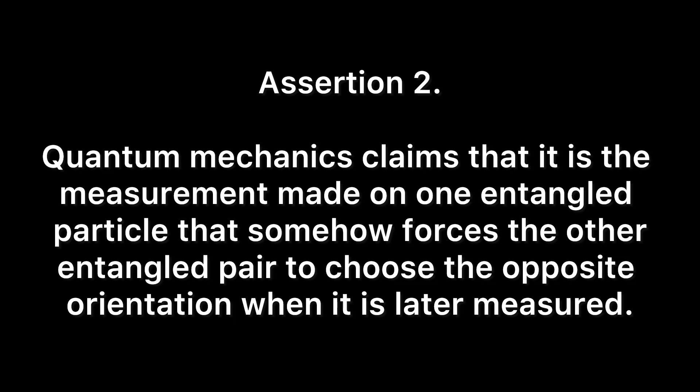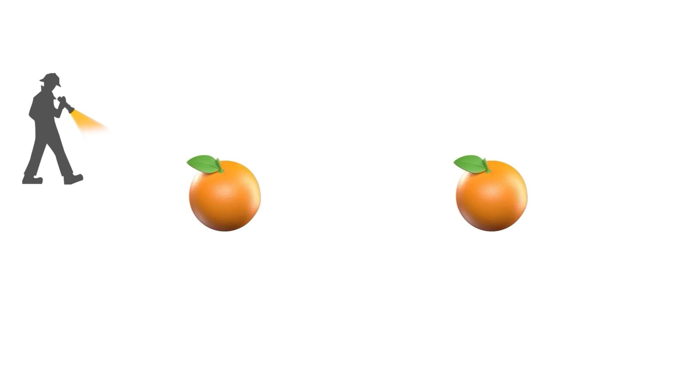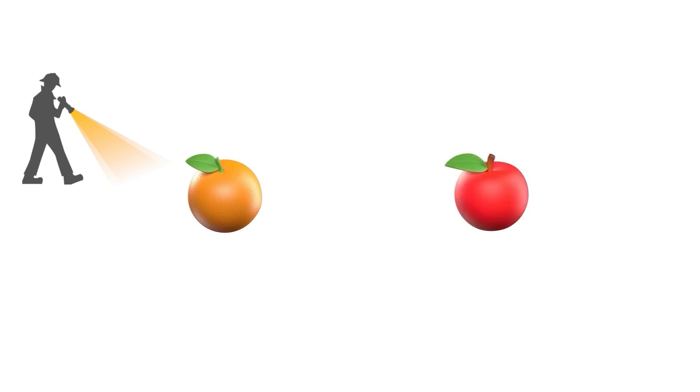The following argument will show that this popular assertion is also not true. It is the assertion of quantum mechanics that the act of measuring one entangled particle forces the other entangled pair to choose a specific orientation when it is measured. Consider these two entangled electrons about to undergo measurement. Let's measure the first electron. The orientation is spin-down. It is a popular assertion by the majority of physicists that the act of measuring this particle, and the particle choosing a spin-down state, is what forced the other entangled pair into making a spin-up decision. Though there's no reasonable explanation of how this happened, many have accepted it as the truth.